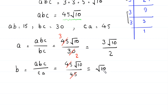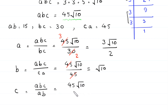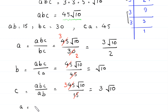C will be equal to A·B·C divided by A·B, which is 45 times root 10 divided by 15. Since 15 goes into 45 three times, C equals 3 times root 10. So we have A equal to 3 times root 10 over 2, B equal to square root of 10, and C equal to 3 times root 10.